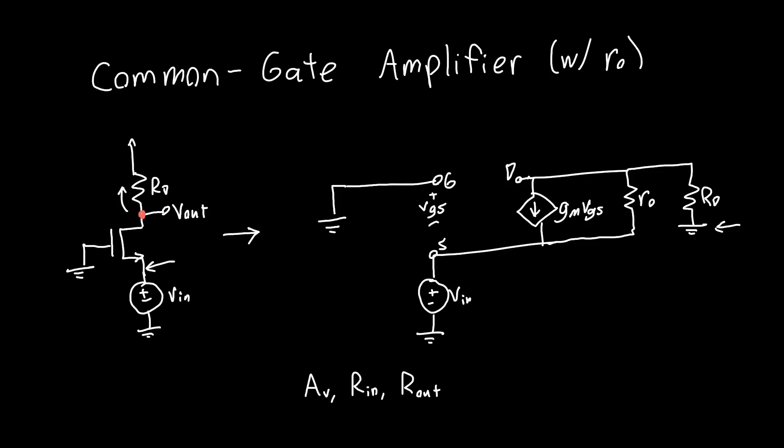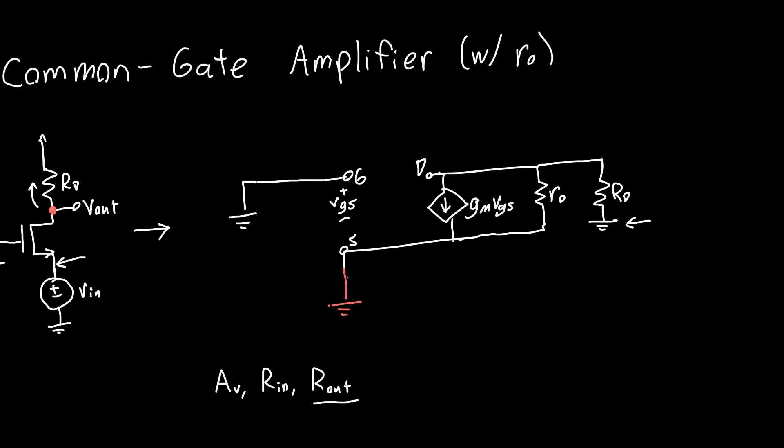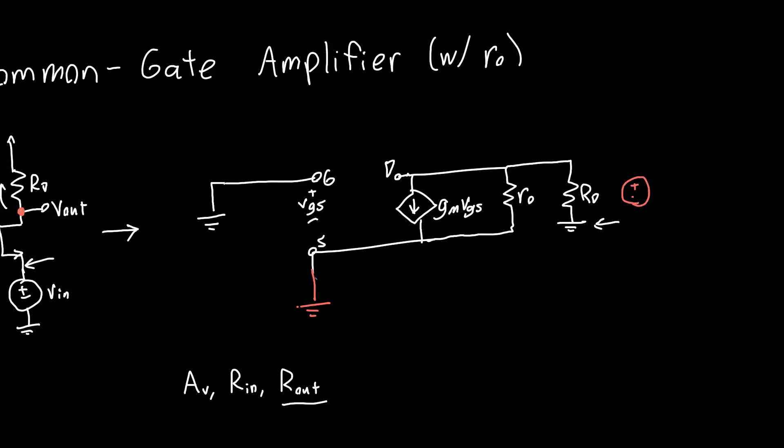I'm going to actually start this time with the output resistance, because I've done this calculation before and I know it's considerably easier than the other ones. We know that VIN has to become zero, so it becomes a short to ground when we calculate our output resistance. We're applying a test voltage at the output and measuring the test current, I test.